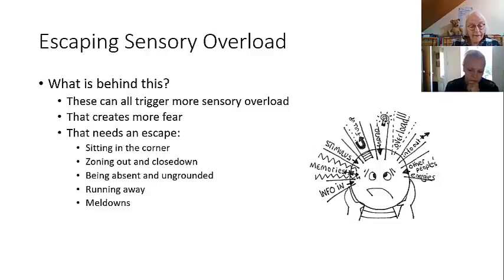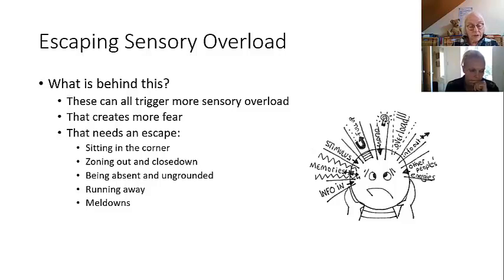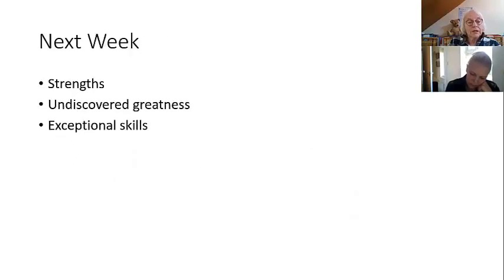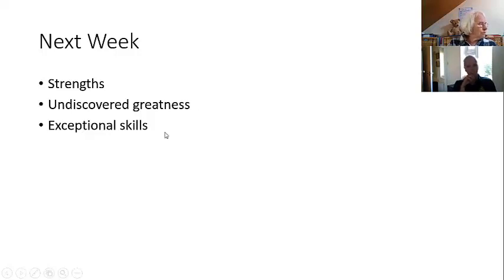Everything we've talked about puts kids into sensory overload, and being ungrounded makes the cacophony in their head much worse. It comes back to my three basic principles: grounding, breathing, and controlling mental images; using strengths to improve rapport and understand their experience; and learning how best to use mental imagery. Next week I want to go back to strengths — I call it undiscovered greatness — because some neurodivergent students have the most exceptional skills, and that's one of my favourite topics.